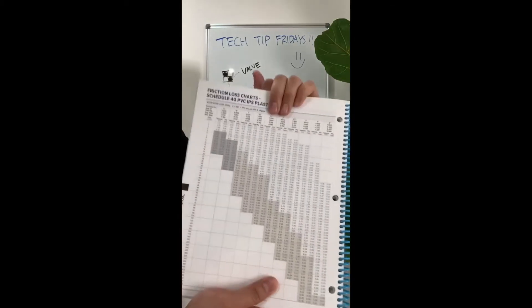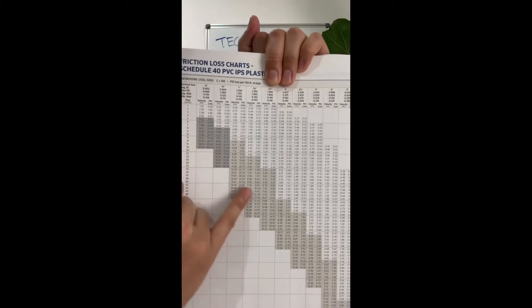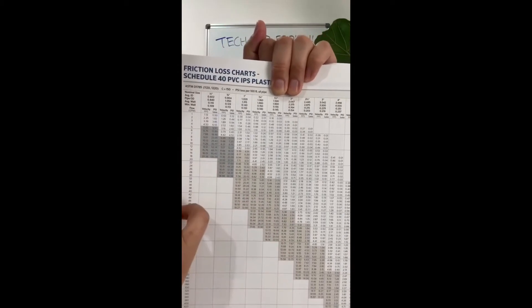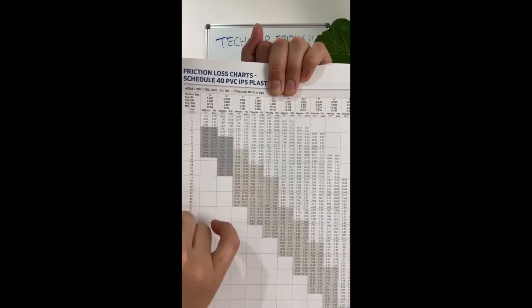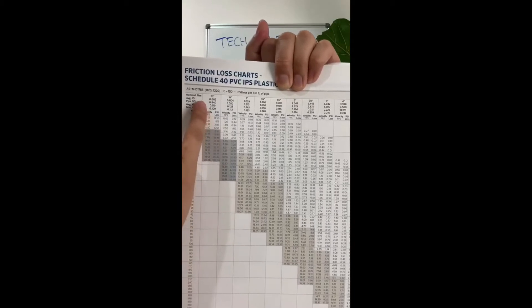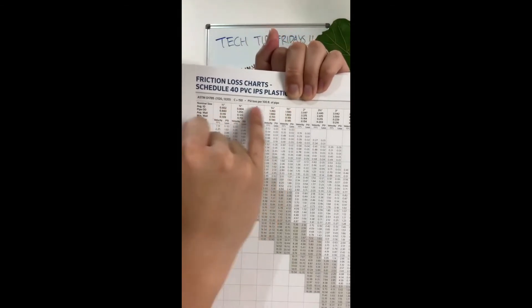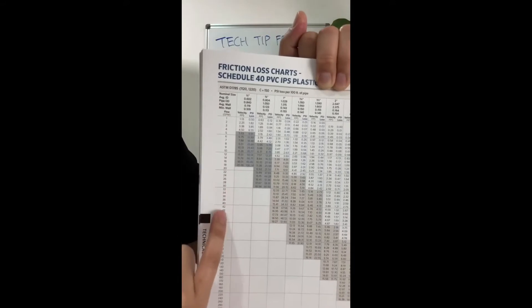Now the way that you read this chart is there's a gray zone right here. Now the gray zone means that you're exceeding 5 feet per second. Now on the chart, you have pipe sizes on top, and then you have GPMs on the side.